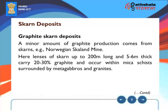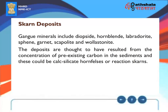Graphite skarn deposits: A minor amount of graphite production comes from skarns — example, the Norwegian Skyland Mine. Here, lenses of skarn up to 200m long and 5–6m thick carry 20–30% graphite and occur within mica schist surrounded by metagabbros and granites. Gangue minerals include diopside, hornblende, labradorite, sphene, garnet, scapolite and wollastonite. These deposits are thought to have resulted from the concentration of pre-existing carbon in the sediments, and could be cal-silicate hornfels or reaction skarns.